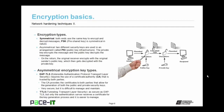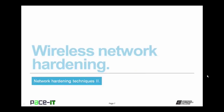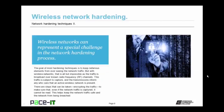With that covered, let's move on to Wireless Network Hardening. Wireless networks can represent a special challenge in the network hardening process. The goal of most hardening techniques is to keep nefarious elements from ever seeing the network traffic. But with wireless networks, that is all but impossible as traffic is broadcast over known radio frequency channels. This traffic is subject to capture, and the transmissions inform any who care that an active wireless network is present. There are steps that can be taken — such as encrypting the traffic — to make sure that even if the network traffic is captured, it cannot be read.